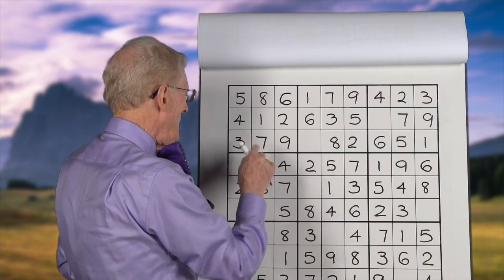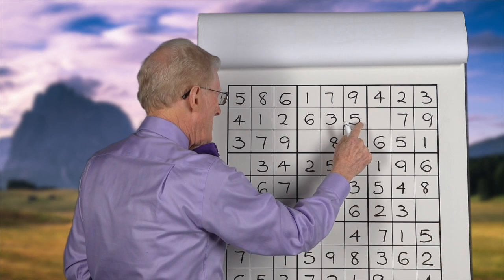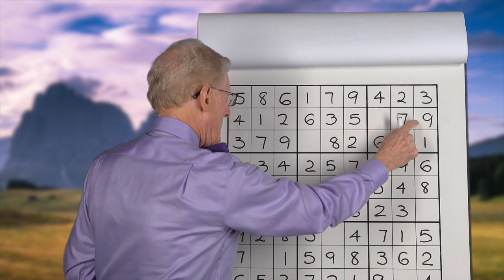And what about this next row? We'll go 1, 2, 3, 4, 5, 6, 7. It's an 8.